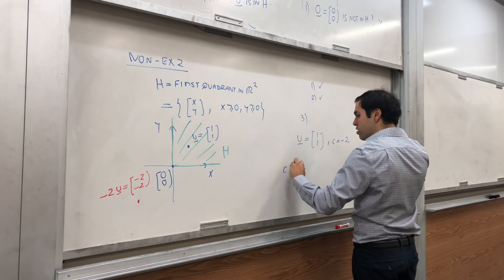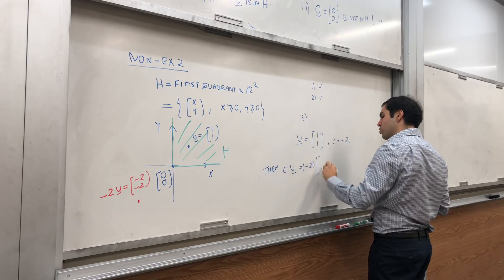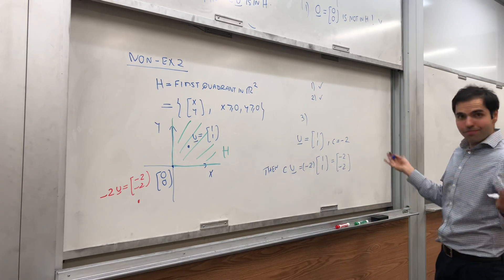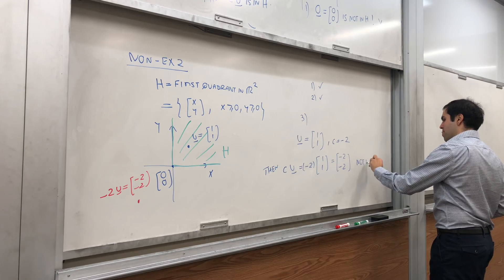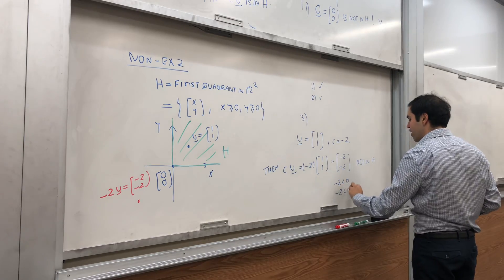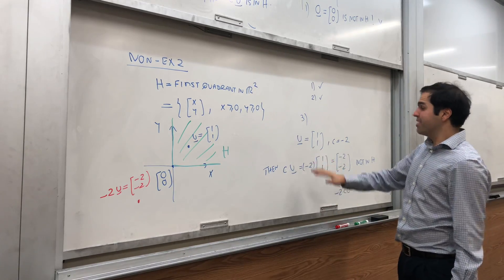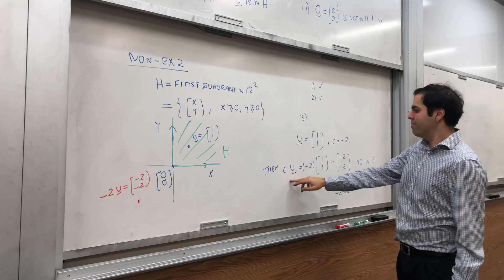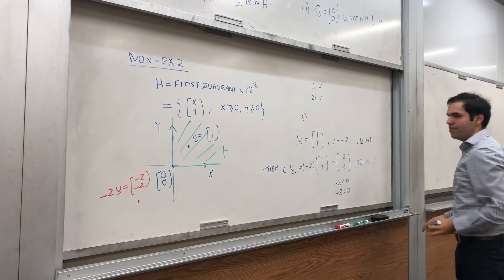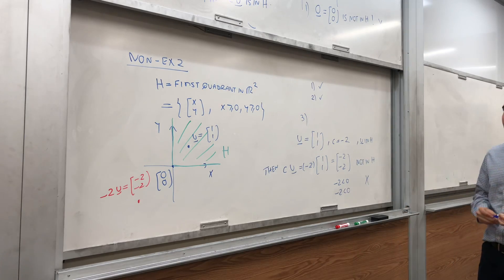Well, that's (-2, -2). And, that's not in H anymore. So, let c be minus 2. Well, it's a concrete number. Then, cu, well, that's minus 2 times (1, 1). And, that's (-2, -2). Not in H. Because, you know, minus 2 is negative, and minus 2 is also negative. So, neither components are positive. So, you see, you have an example of a vector in H, but cu is not in H. u in H. And, that's why, it doesn't satisfy this third property, and therefore, H is not a subspace.